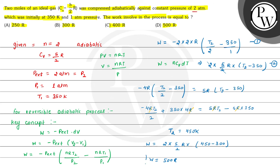So 500R is given in option D, hence option D is the correct choice for this question. Hope you understood it well. All the best and thank you.